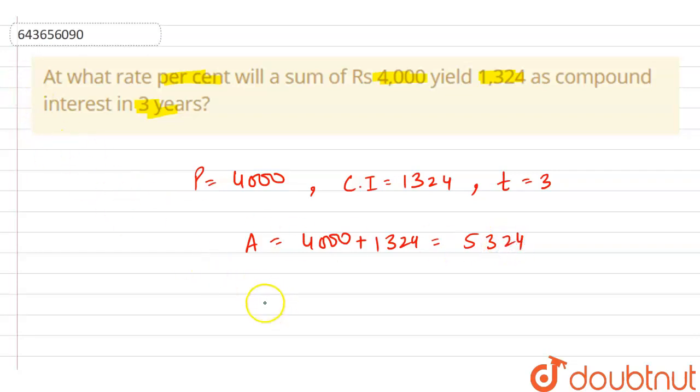We know that there is a formula that is A equals P into 1 plus R by 100 whole raised to power t.